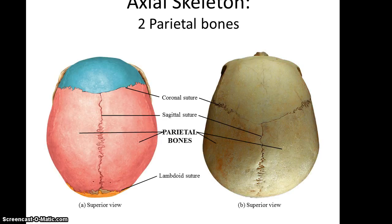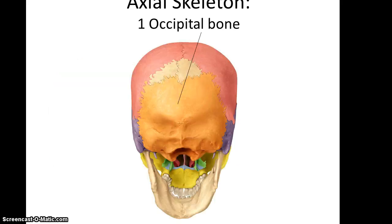We have two parietal bones, which are directly posterior to the frontal bone. The occipital bone is inferior to the parietal bones and posterior to the parietal bones as well.